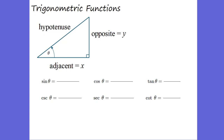First, we're going to take a look at what we're going to call trigonometric functions — things like sine of theta, cosine of theta, tangent of theta. You've probably heard of those before, but maybe newer is cosecant of theta, secant of theta, and cotangent of theta. And we're going to figure out what all of these mean.